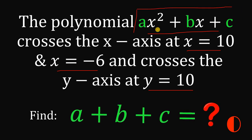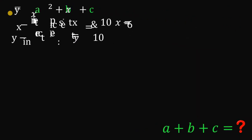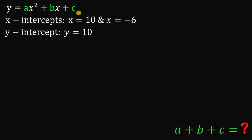Given this polynomial ax squared plus bx plus c, we can equate this to y, because we have a parabola that crosses the x-axis. This means x equals 10 and x equals negative 6 are the x-intercepts, and it crosses the y-axis at y equals 10, so y equals 10 is the y-intercept. So we have y equals ax squared plus bx plus c, with x-intercepts at 10 and negative 6, and y-intercept at y equals 10.